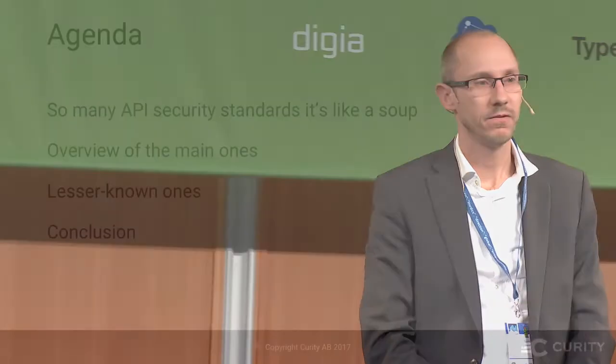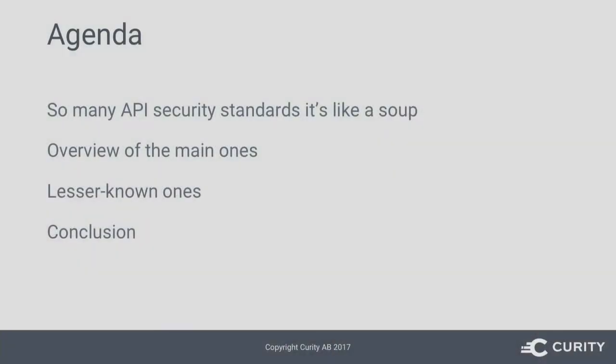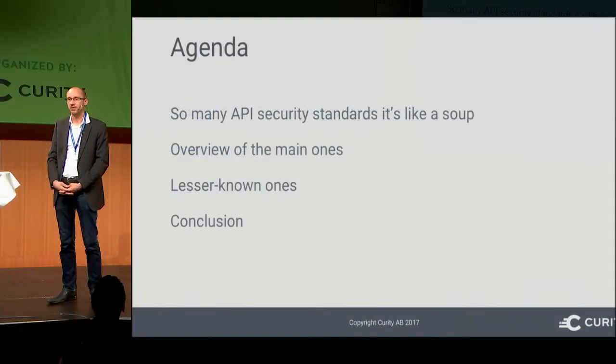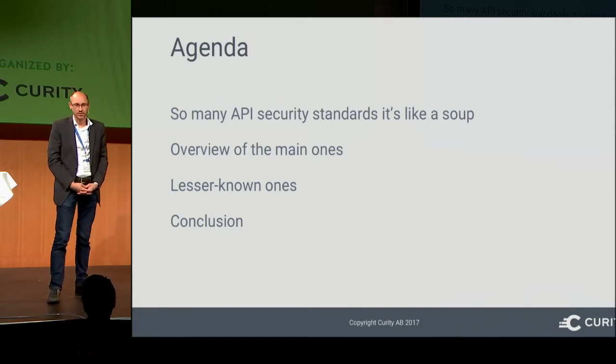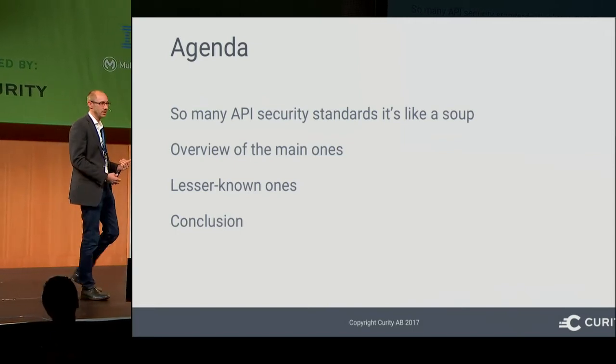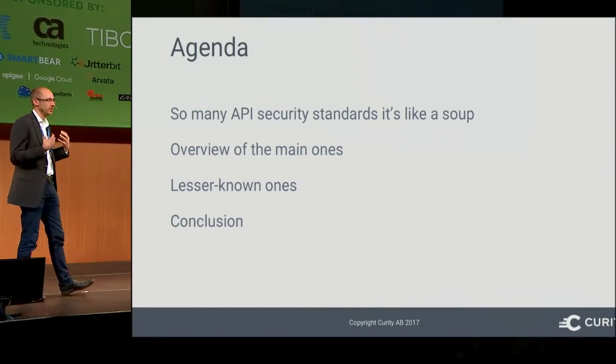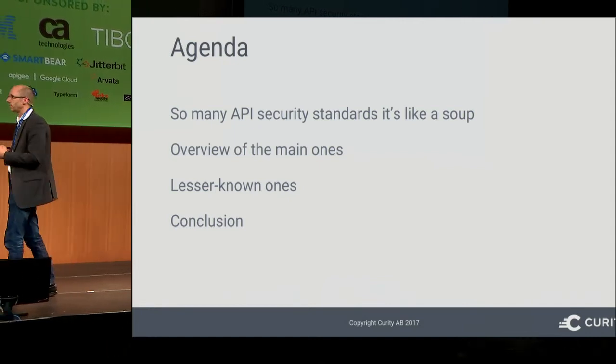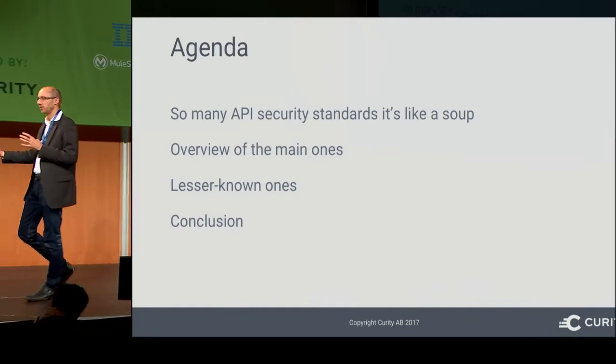There are over 50 specifications related to API security that you need to be aware of, depending on how you count. If you print those out, that's over 2,000 printed pages — almost twice as many as War and Peace, and almost seven times as many as Homer's The Odyssey. That's a lot of information, first of all to read, but even more to comprehend, understand, and be able to apply.